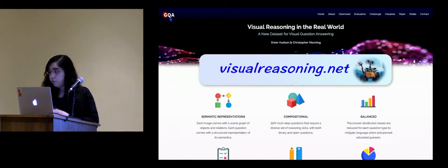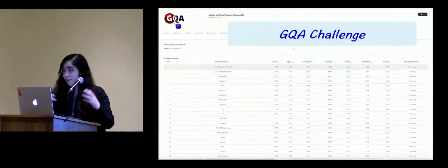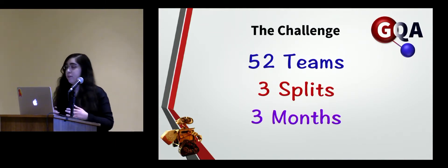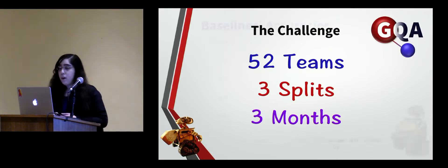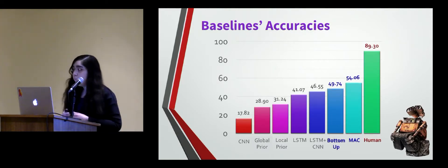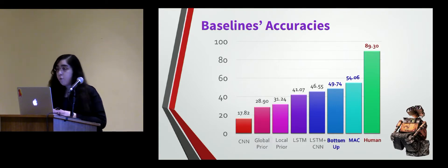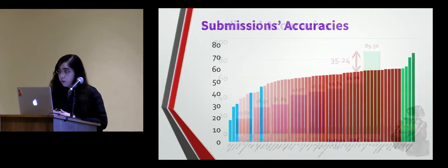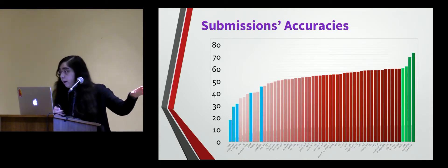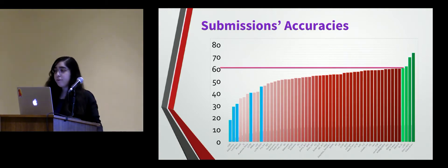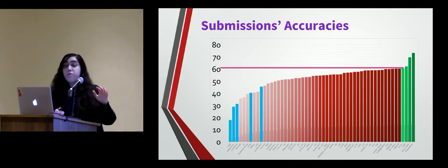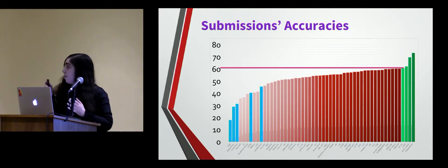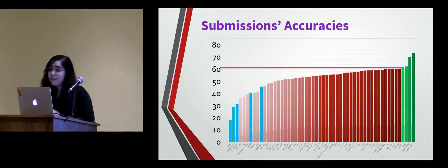For more information about the GQA dataset, visit the website. Moving on to the challenge: over the last three and a half months, we had 52 teams participate and submit results across three tracks — development, test, and challenge. The baselines we provided ran between 17 and 54%, while human performance on GQA is about 89%, so initially there was a very large gap. Most teams improved scores from the initial 54 to about 60%, but the winning teams achieved significantly higher scores up to a very impressive 73%. The first place team will shortly give their talk and present their model.